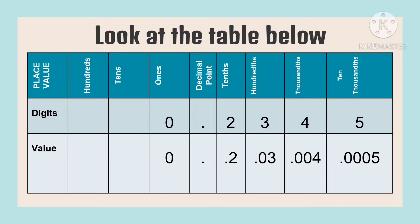What is the value of the digit 3? The value of the digit 3 is 300. Why is there a 0 in front? The 0 will be the place value holder. Because the place value of 3 is hundreds, it needs to be in the hundreds place.